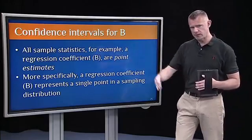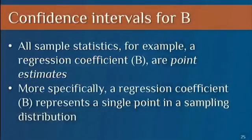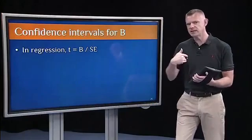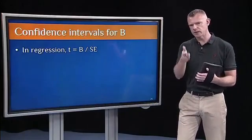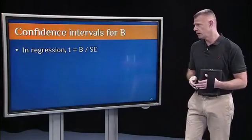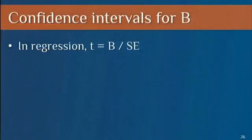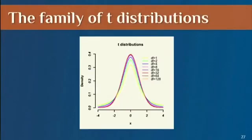This all is the same as what I said for a sample mean. We have a regression coefficient — if that's just from one sample, it's a point estimate, meaning it represents just one point in this possible sampling distribution. From regression, we can get a T value — R gives you that T value and then a P value associated with it. The T value is just the unstandardized regression coefficient B over the standard error, and it's going to fall somewhere in a sampling distribution.